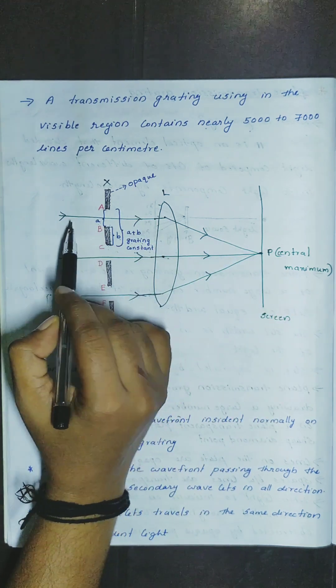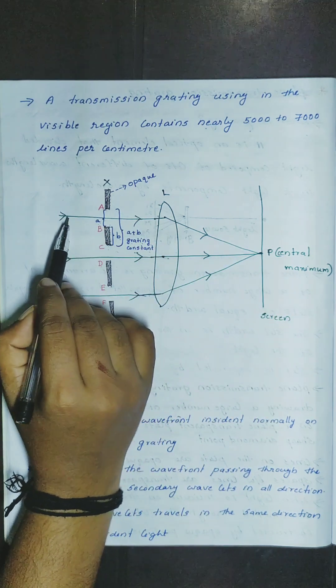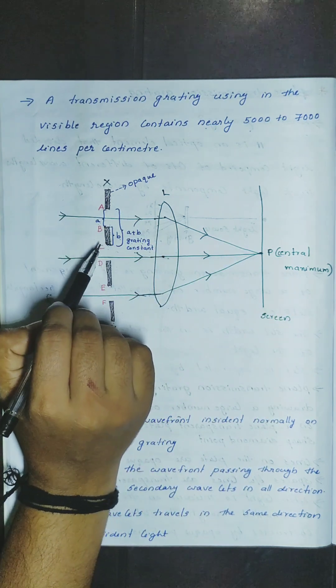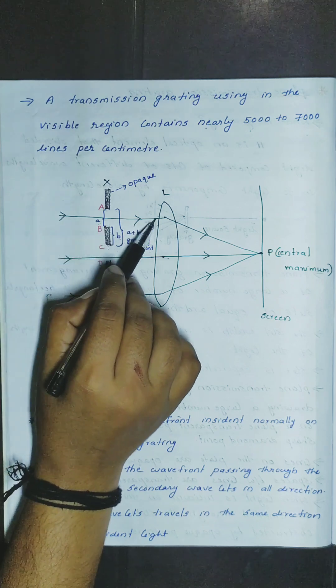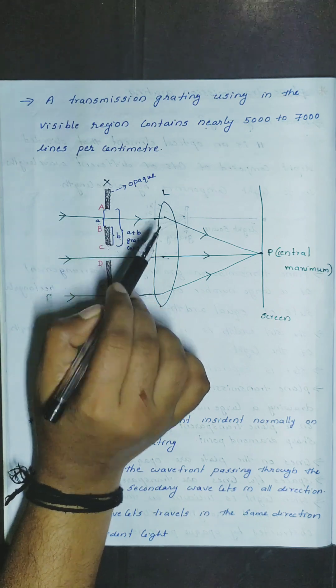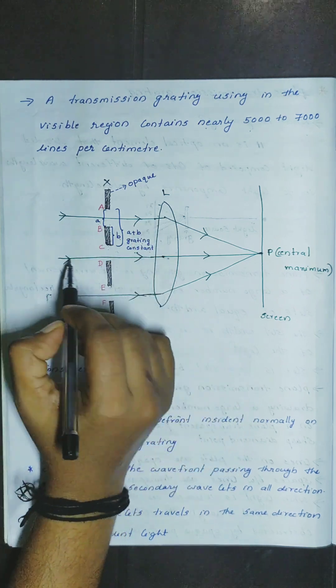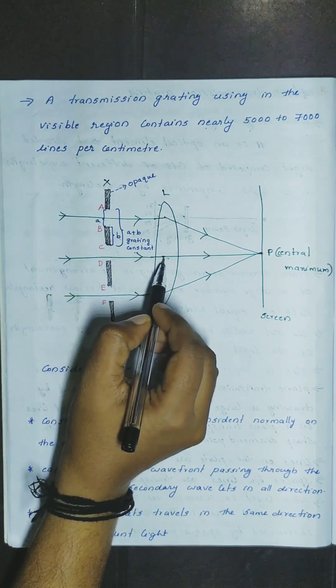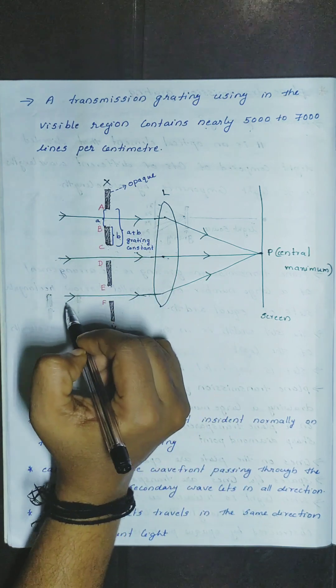This region shows a convex lens used to focus the diffracted light.